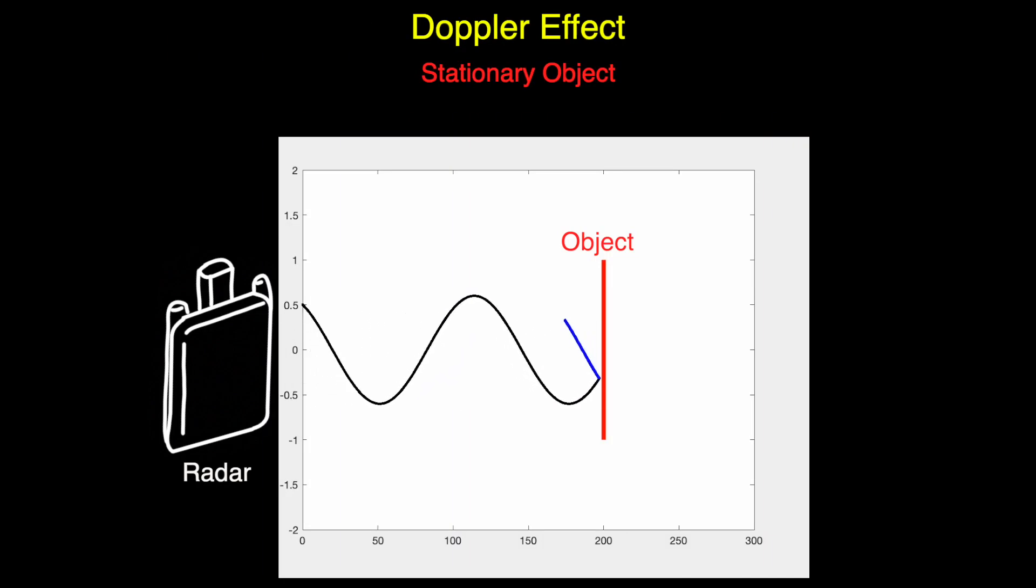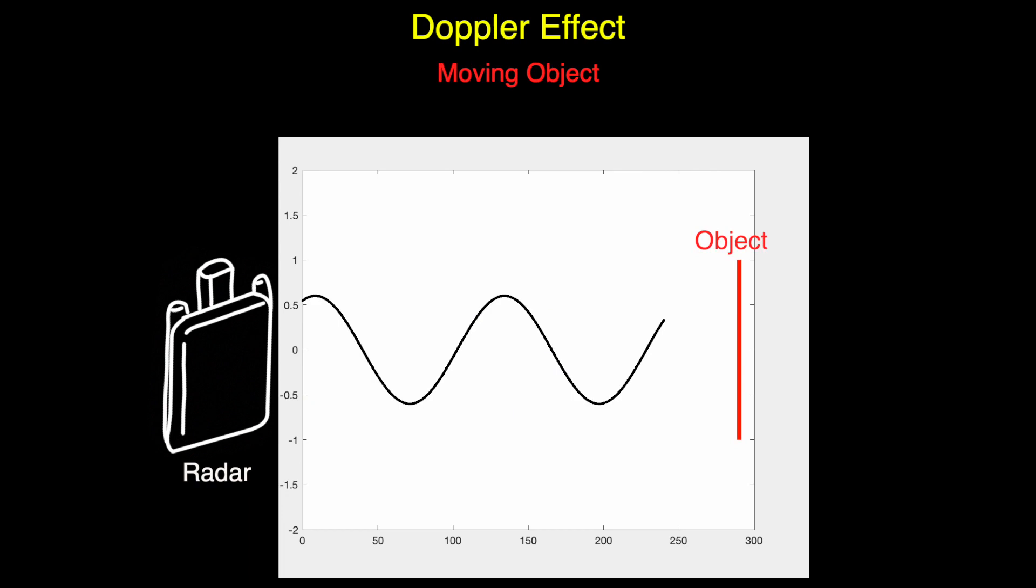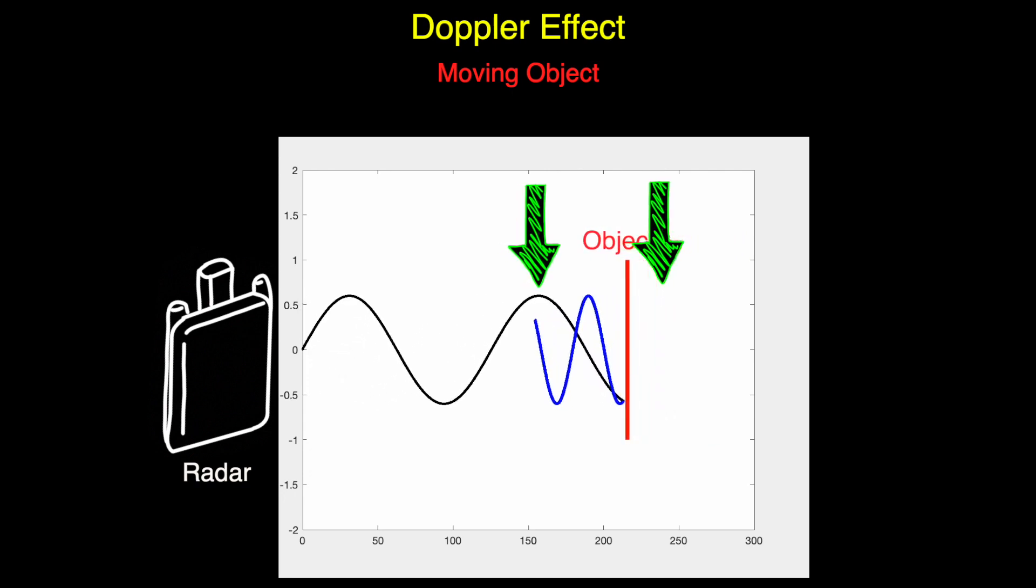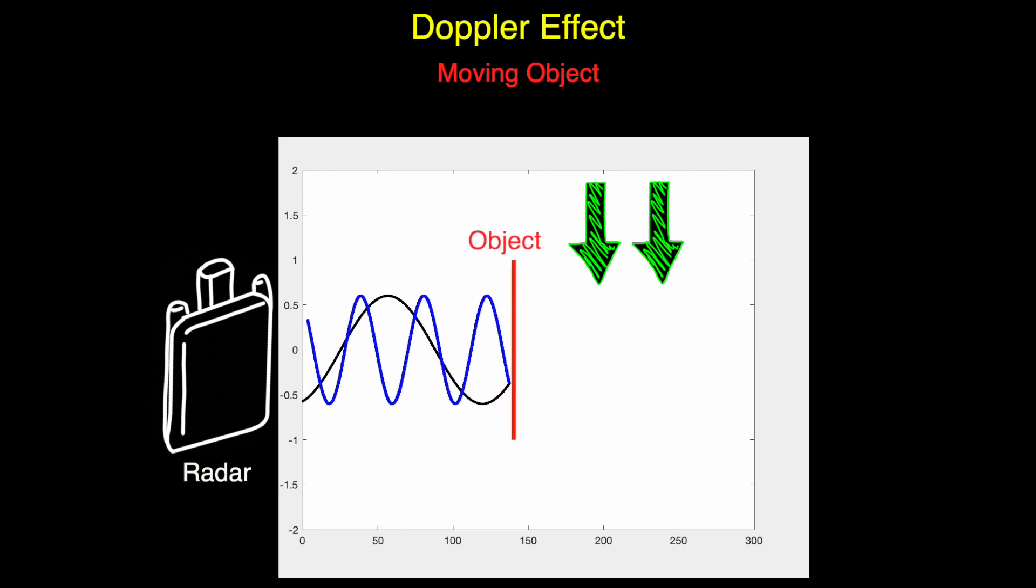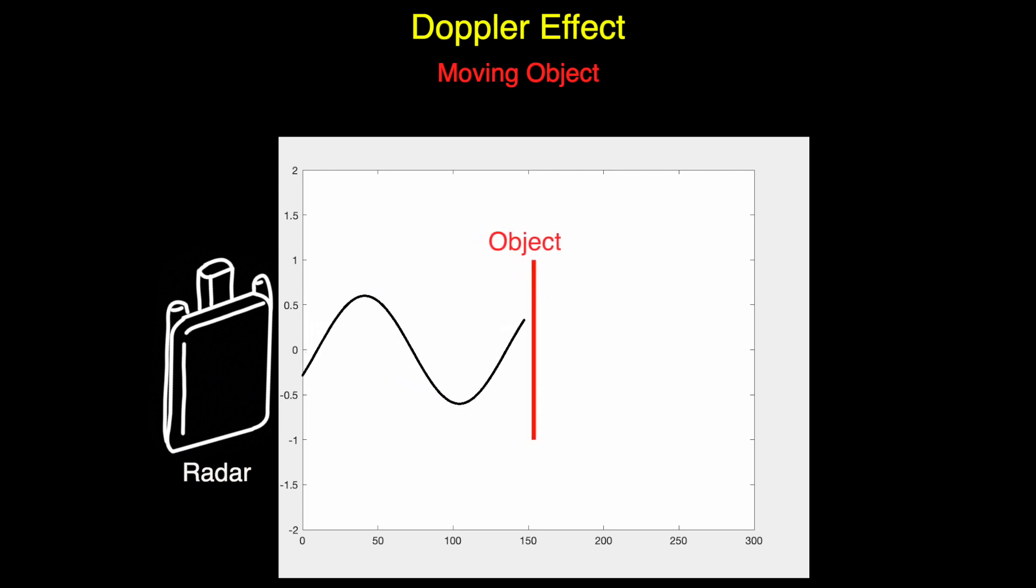Let's start with the Doppler effect. Imagine a radar sends out a signal at a fixed frequency. If the radar and the object it's detecting are both stationary, then the signal will reflect off that object and come back to the radar at the same frequency, like bouncing off a mirror. However, if the object is moving towards the radar, then the reflected frequency is higher than the transmit frequency. This increases the frequency proportional to how fast the object is moving. And the opposite is true if the object is moving away, then the reflected frequency is lower.